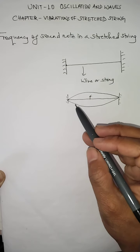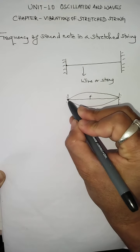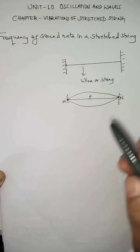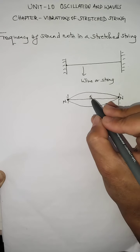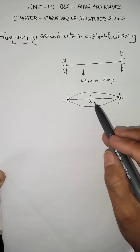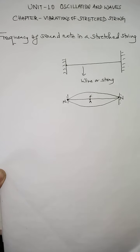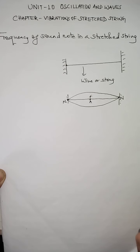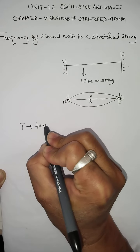The ends of the wire or string are clamped to the rigid support, and because of this clamping, a node is formed at each end. At the node the particles have no displacement, whereas maximum displacement occurs at the middle, where an antinode is formed. So when you pluck the string at the middle, nodes form at both ends and an antinode forms in the middle. Every string connected to a rigid support is provided with a certain tension T, which is a force in the string.